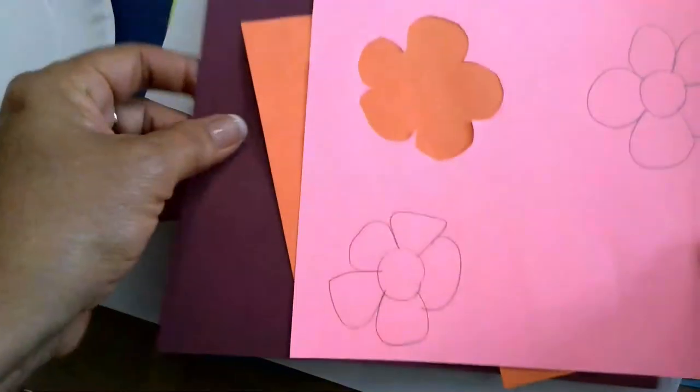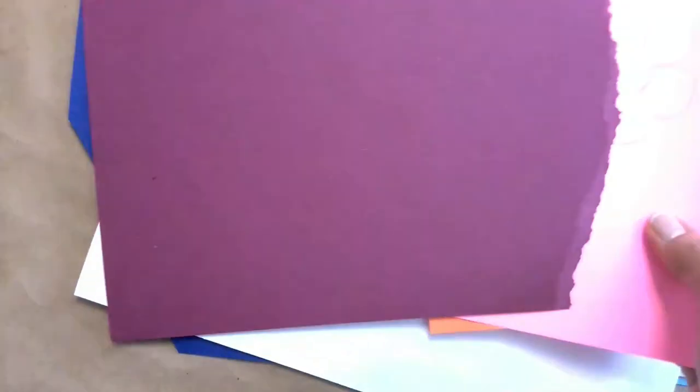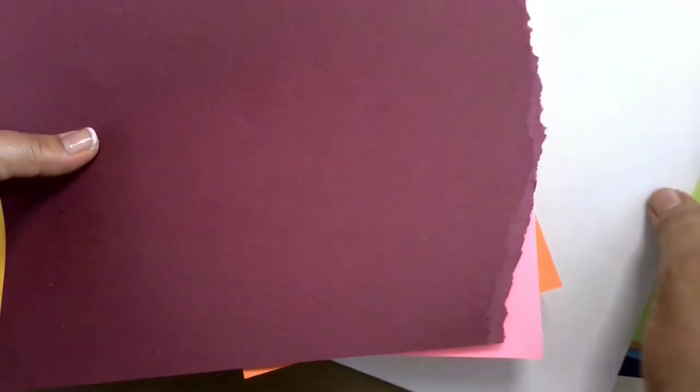But you can also do torn paper. You see how this paper has been torn there. And you need some white paper or whatever color you want your care notes to be, cutting to the size you want your care notes to be.